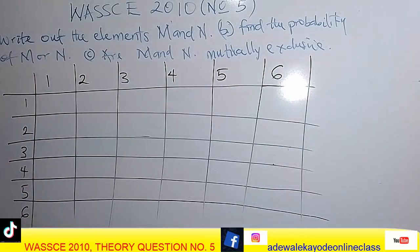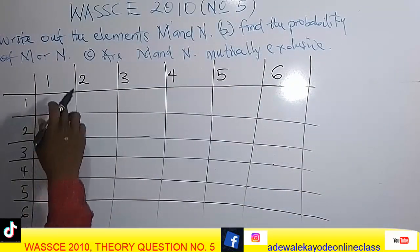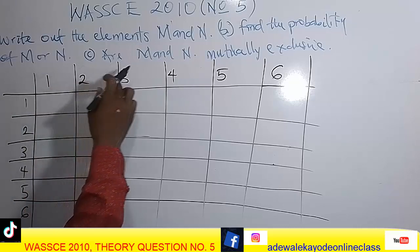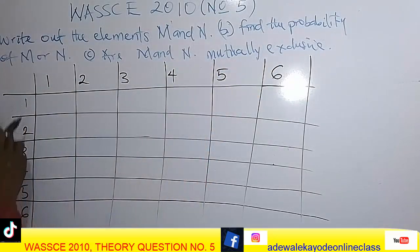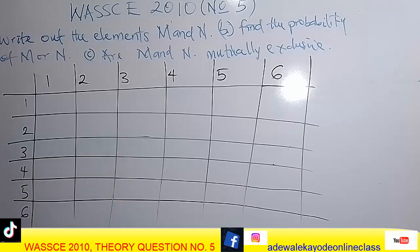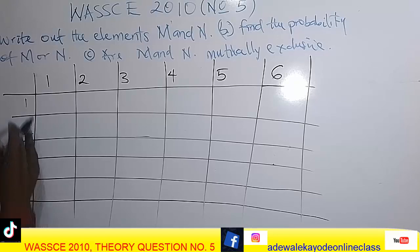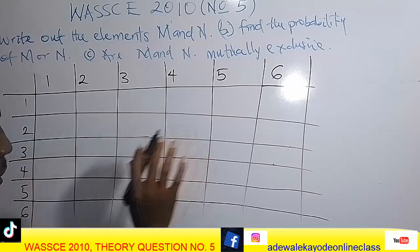The first die shows one, two, three, four, five, six and the second die also shows one, two, three, four, five, six. Let's complete the table to find where the sum equals 10 and where the difference equals 3.